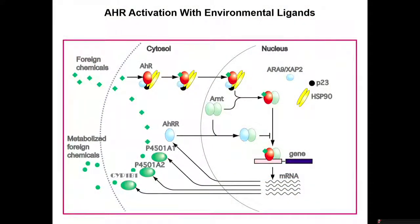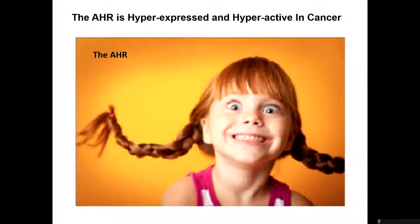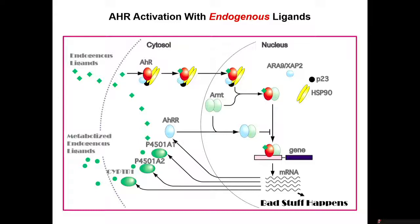What I'm going to show you today is that that's not exactly the situation in tumor cells. Nothing happens in normal cells unless a ligand is added. But in tumor cells, AHR is hyperexpressed and hyperactivated. I've been trying to find a graphic that would express what I see in my mind as a hyperactive AHR in these cancers, and I came up with this — which clearly looks like a kid who's in the gene editing candy store. So this is what the AHR is doing in most of the tumors we've looked at, because these tumors make bucket loads of endogenous ligands that drive this whole process constitutively.